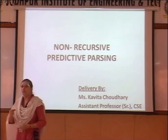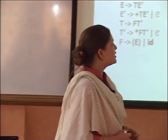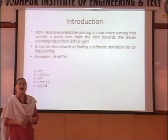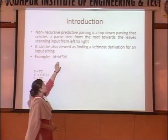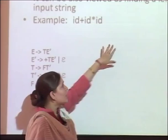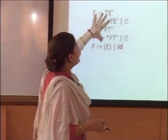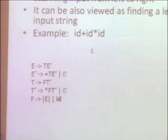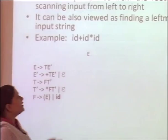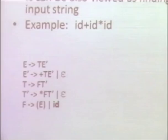If we enter into the final starting symbol, that means the parsing was successful. Now switching towards non-recursive predictive parsing: suppose I have been provided with an arithmetic expression — identifier plus identifier multiplied by a third identifier. For this particular arithmetic expression, we are provided with a grammar set that contains grammar symbols separated by plus and multiplication symbols. From this grammar set, we need to parse this particular input string.